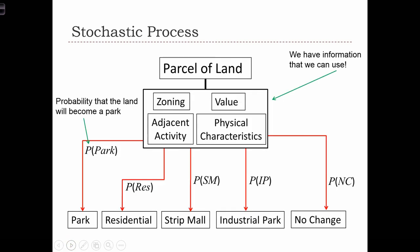We do have information about zoning policies, land values, the activities in adjacent parcels, and the physical characteristics of the land. Is it a wetland? Is it a park? Is it an area that needs to be protected, or is it on a steep slope or flat slope? We have all sorts of information about this parcel of land that we can use to determine different levels of chance for each of the outcomes to occur.